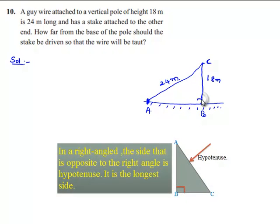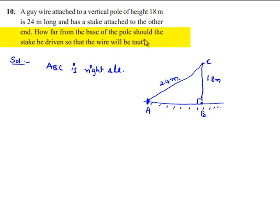Then here ABC is a right angle triangle. So how far from the base of the pole should the stake be driven so that the wire will be taut? We need to find the length of AB here. So let it be A meters.